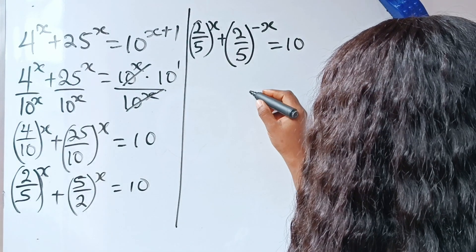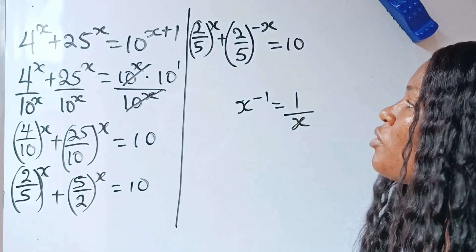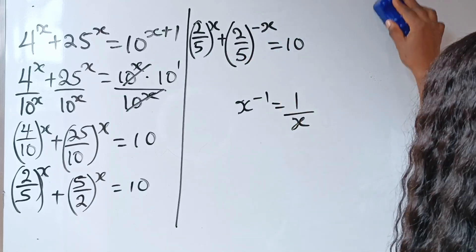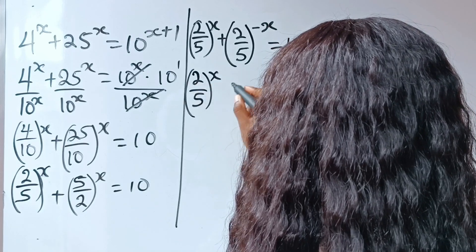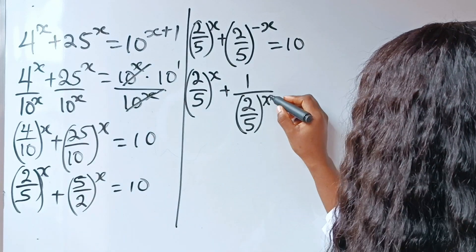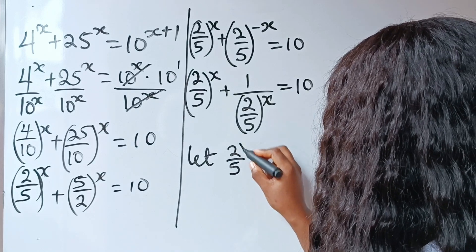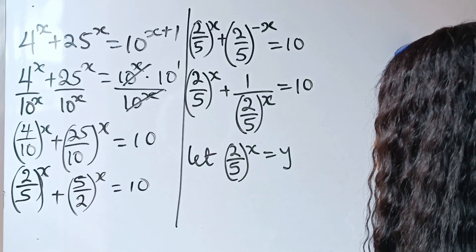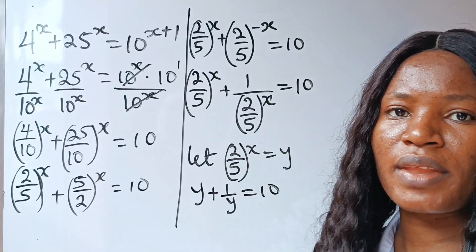Also note that x to the power of minus 1 is equal to 1 over x. So to remove this negative sign, I need to introduce 1 over to this place. So I'll write 2 divided by 5 raised to the power of x, plus 1 divided by 2 over 5 raised to the power of x, is equal to 10. Now we are going to say let 2 over 5 to the power of x be equal to y. So we have y plus 1 over y is equal to 10.